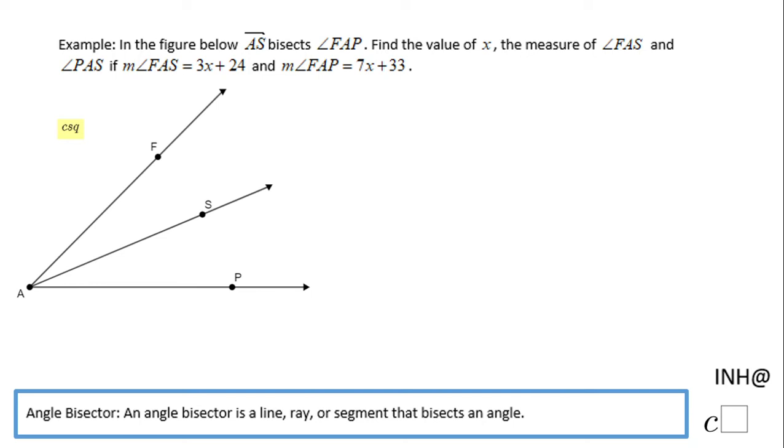Welcome or welcome back to iNeedHelp@Csquared. In this example, we have ray AS bisecting angle FAP. This means these two angles are congruent.